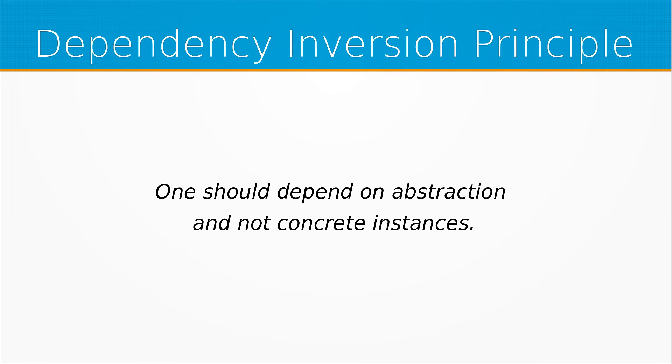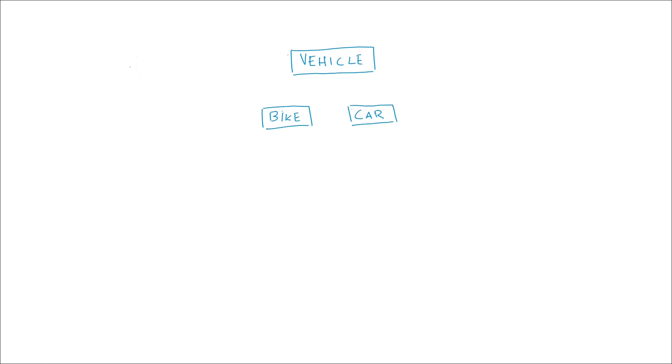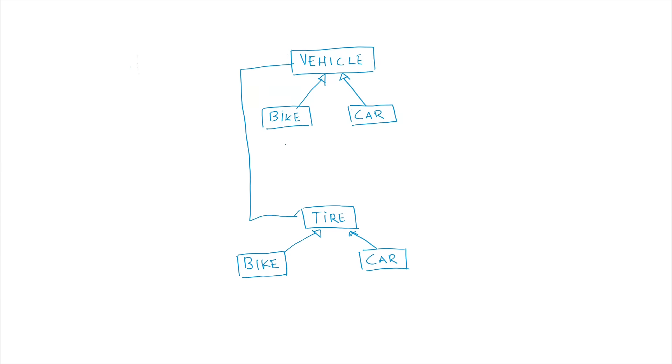Finally we get to the Dependency Inversion principle. It says one should depend on abstraction and not concrete instances. Related to all the previous principles: instead of having a specific car with specific instances of tires, you could have a generic interface for tires, and your specific vehicle would have a dependency on that interface. This makes your code more flexible.